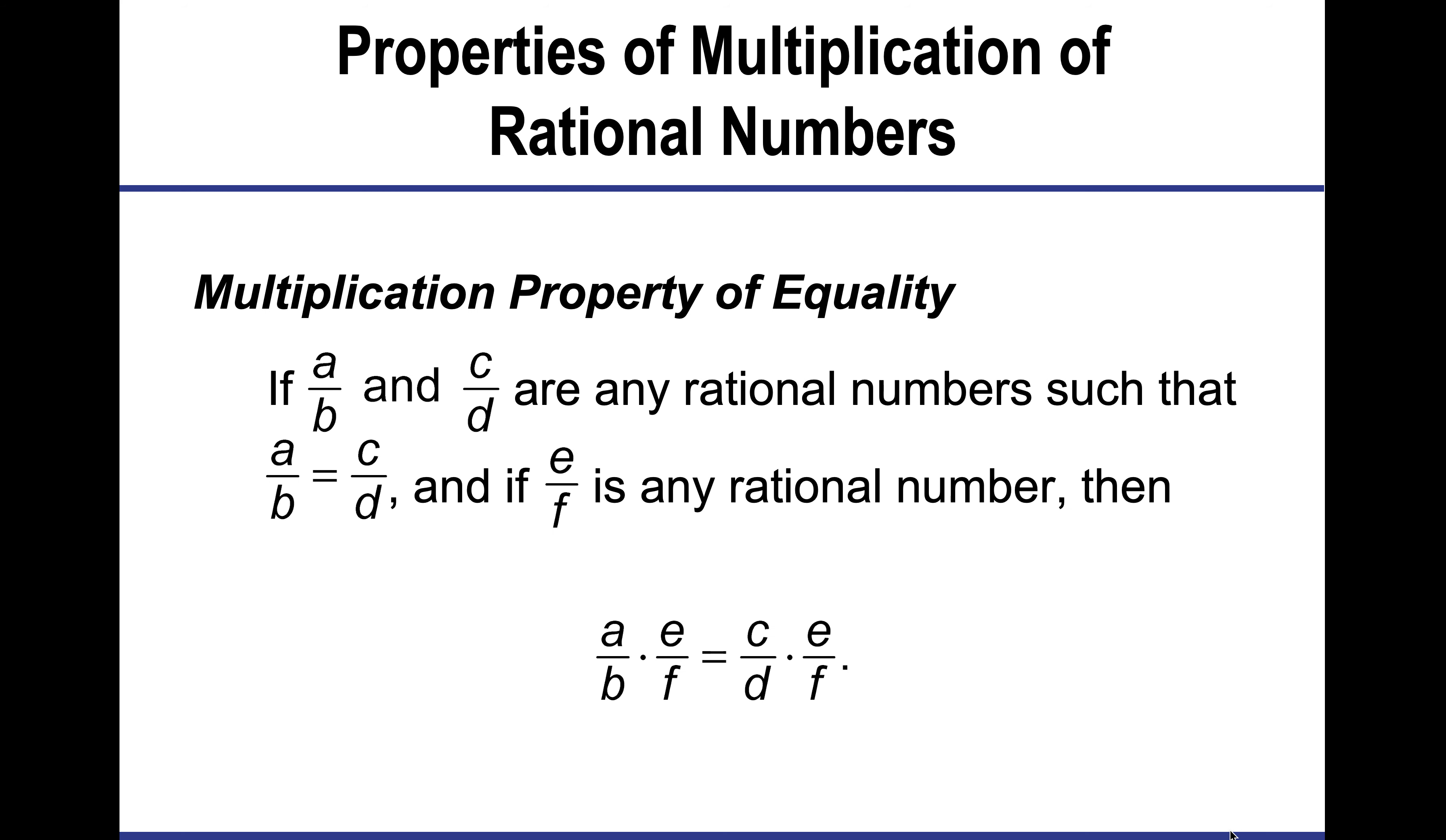If I'm looking at the multiplication property of equality, rational numbers work the same as integers. If I multiply both sides by the exact same fraction, it is still an equivalent statement.